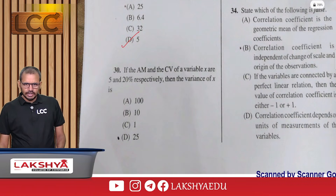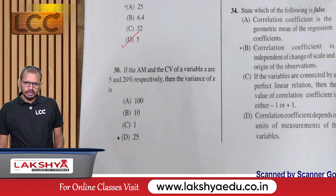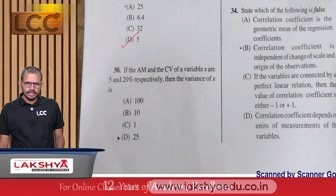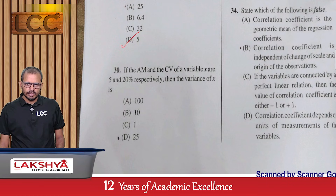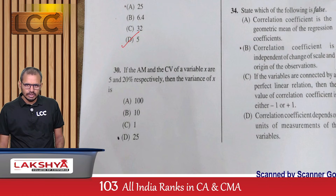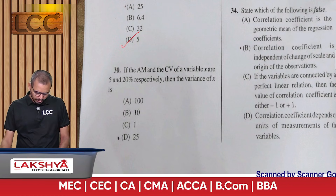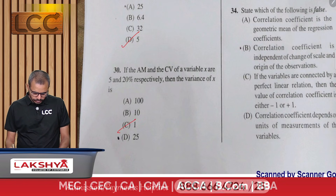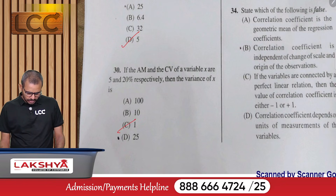Question 30: The arithmetic mean and coefficient of variation (CV) of variable x are 5 and 20% respectively. Find the variance of x — option C.